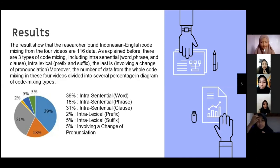For the results, the researcher found Indonesian-English code mixing from the four videos with 116 data points. As explained before, there are three types of code mixing, including intrasential word, phrase, and clause, intralexical prefix and suffix, and the last is involving a change of pronunciation. Moreover, the number of data from the whole code mixing in these videos are divided into several percentages in a diagram of code mixing types. The highest percentage of code mixing found in Dedy Corbuzier's videos is intrasential mixing in the form of words which reached 39%, and the lowest is 2% for intralexical prefix.